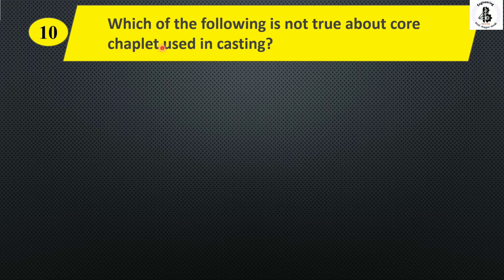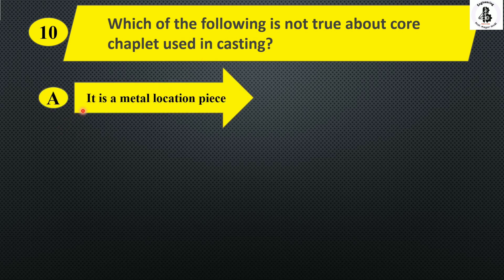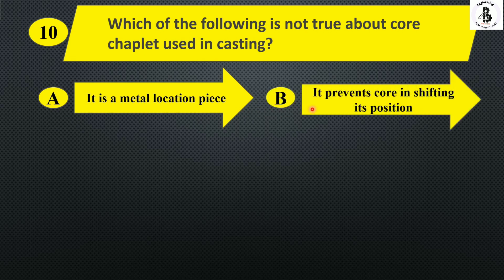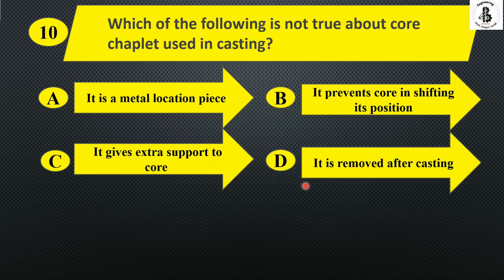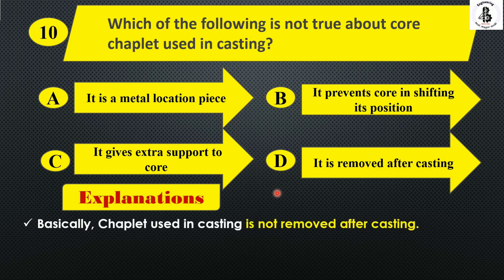Next: which of the following is not true about a core chaplet used in casting? Option A, it is a metal location piece. Option B, it prevents the core from shifting its position. Option C, it gives extra support to the core. And option D, it is removed after casting. Basically, a chaplet used in casting is not removed after casting. So the right answer is option D.